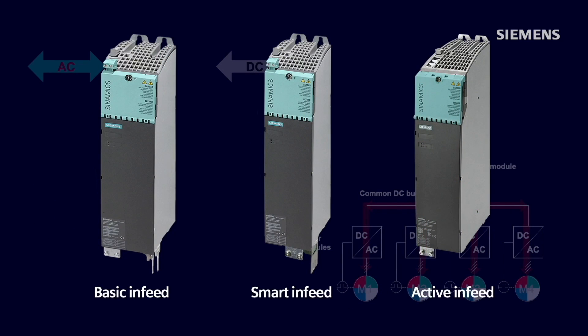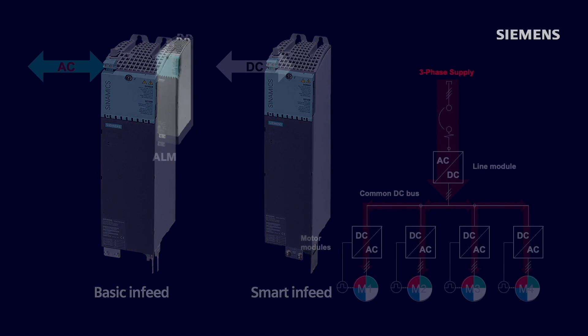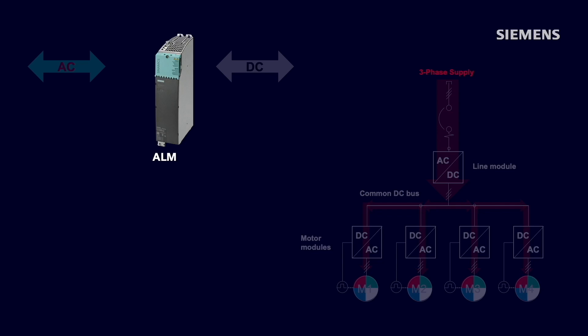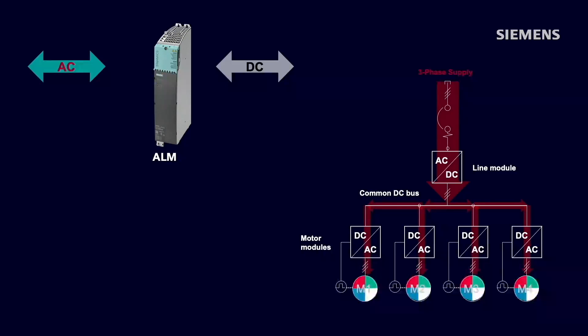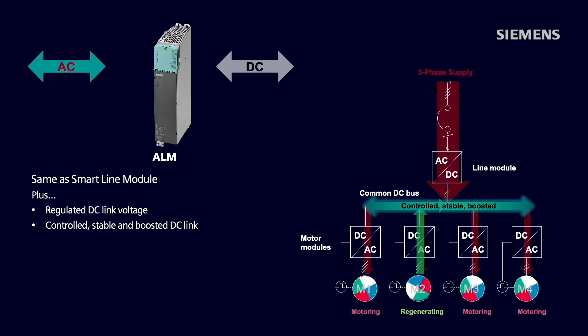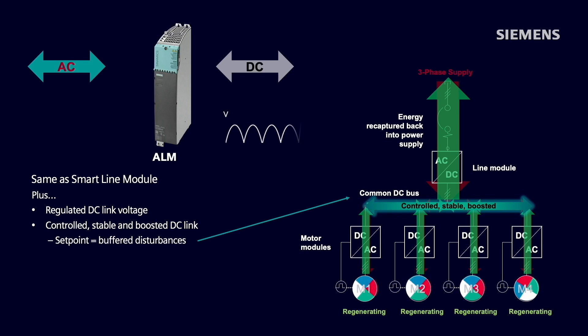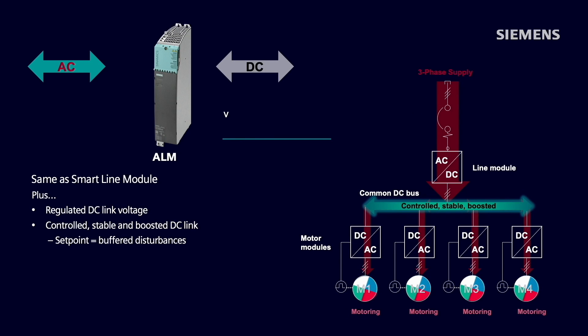Focusing next on using an active line module, which offers the highest performance in addition to being fully regenerative, this option also controls the DC link voltage, so it remains stable and without ripple. If we have any disturbances, whether it be on the incoming power supply or effects from the motor, the disturbances would be buffered out because we're controlling that DC link as a set point value.